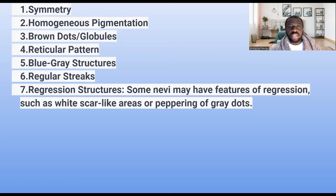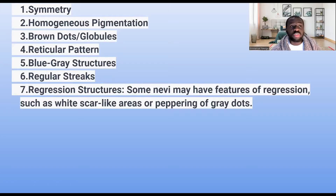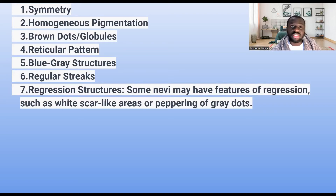One thing you will quickly notice is there will be symmetry — it will be a symmetrical lesion, which means if you draw an imaginary line through that lesion it's going to divide it into nearly equal halves. It's going to have a homogeneous pigmentation, which means the level of pigmentation will usually be uniform. You may have one level of pigmentation, sometimes two, but usually you will notice that uniformity or homogeneity in pigmentation.